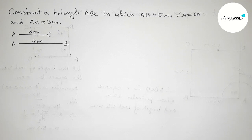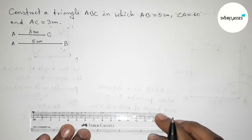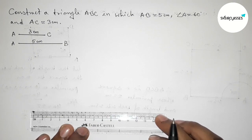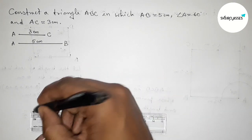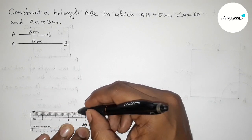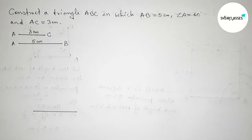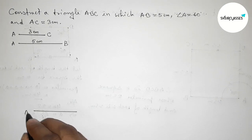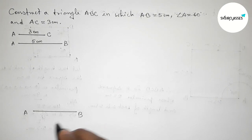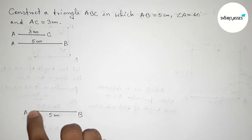Now drawing line AB equals 5 centimeters. Starting from 0, this is the 5 centimeter line segment. Taking point A at the start and point B at the end, so AB is 5 centimeters.